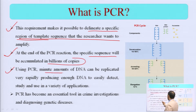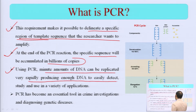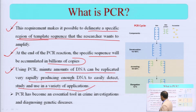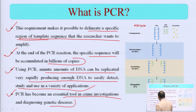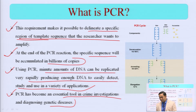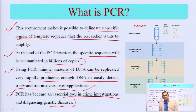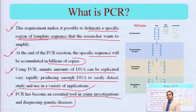By using PCR, a minute amount of DNA can be replicated very rapidly, producing enough DNA to easily detect, study, and use in a variety of applications. PCR has become an essential tool in crime investigation and in the diagnosis of genetic diseases. If a criminal is involved in some crime, you can identify them by using this technique.